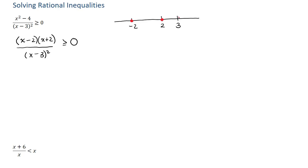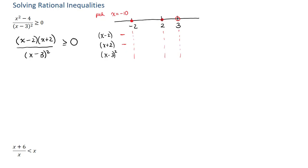I'm going to indicate those with a closed circle, and an open circle for 3 because that gives us a zero in the denominator. To figure out where the expression is positive or negative, we're going to write down the factors and analyze each one separately. For something between negative infinity and negative 2, I'll pick x equals negative 10. Substituting into each factor: negative 10 minus 2 is negative; negative 10 plus 2 is still negative; and the last factor is squared, so it's always positive. So I can put pluses for all intervals for that squared factor.